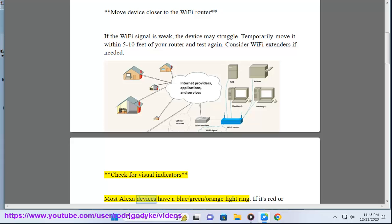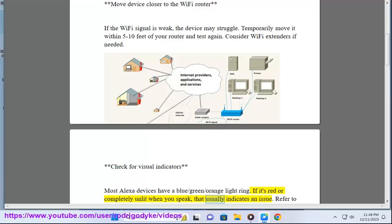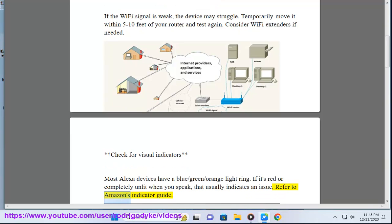Check for visual indicators. Most Alexa devices have a blue-green-orange light ring. If it's red or completely unlit when you speak, that usually indicates an issue. Refer to Amazon's indicator guide.